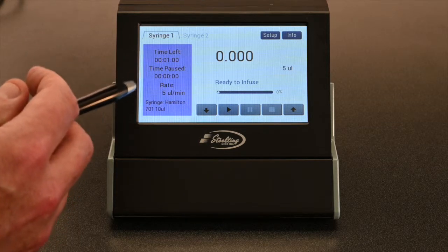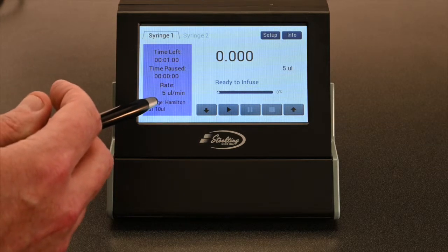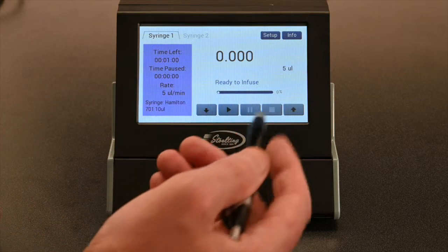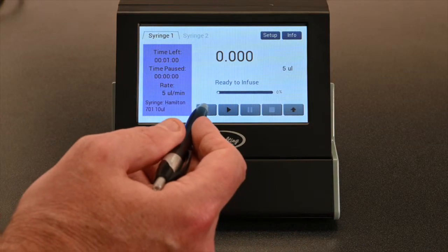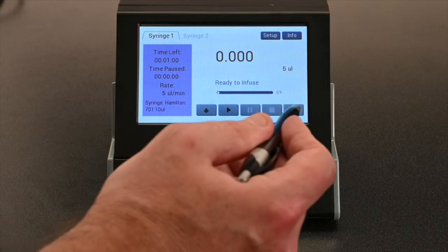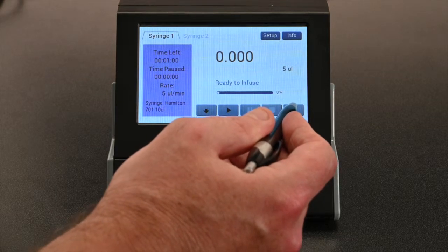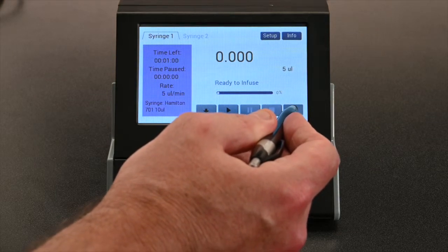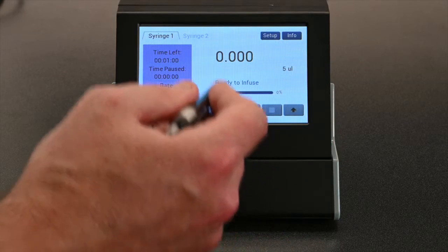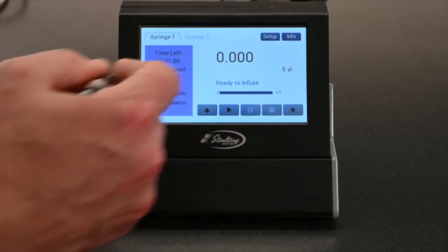Here you have time left, time pause, rate, and the type of syringe and the volume. Over here on the right at the bottom, you'll see that by pushing the button down here, you manually can move the syringe down. By pushing the button over here, you can manually move the syringe plunger head up. Play is simply driving whatever the program is.